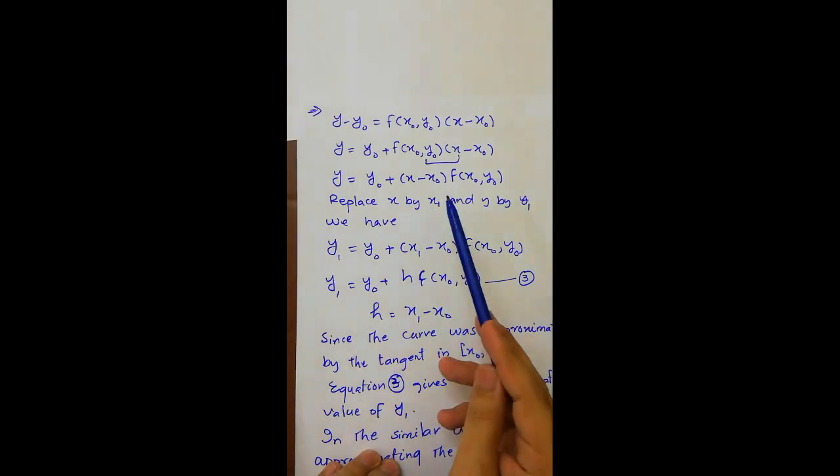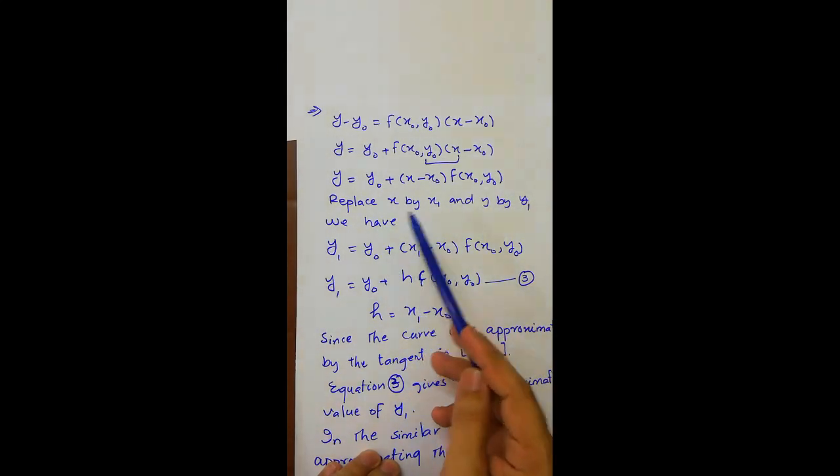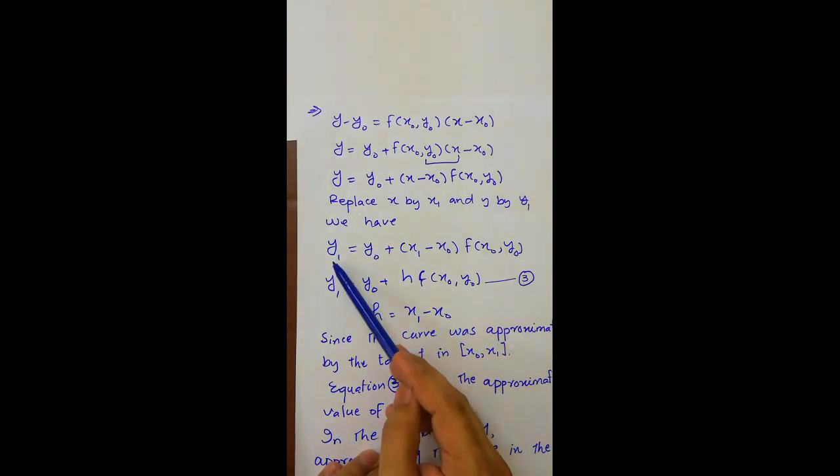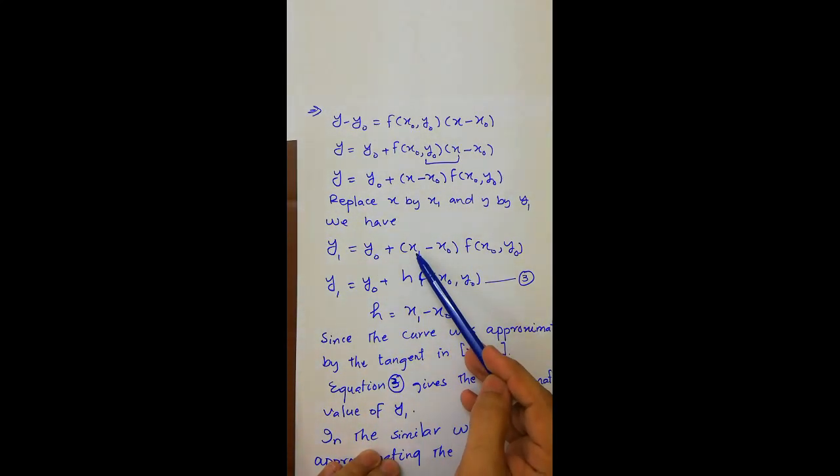Now replace x by x1 and y by y1. We have y1 equals y0 plus x1 minus x0 times f of x0, y0.